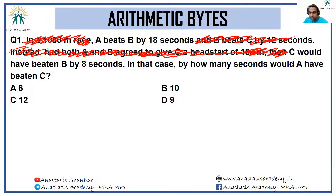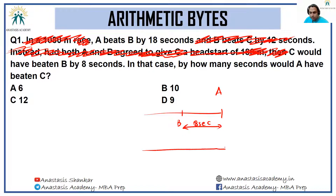So in the race, when A is at the finish line, B is 18 seconds away. Similarly, when C is finishing the race, B is 8 seconds away.